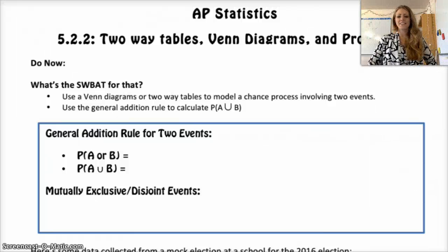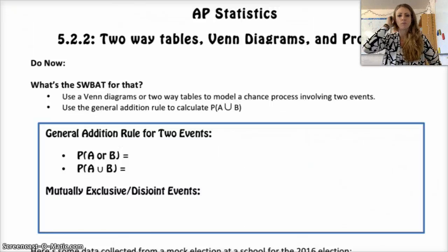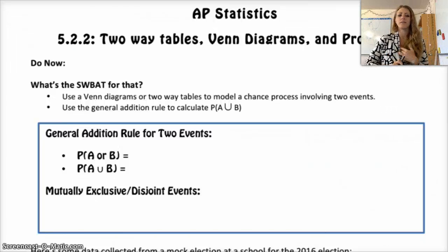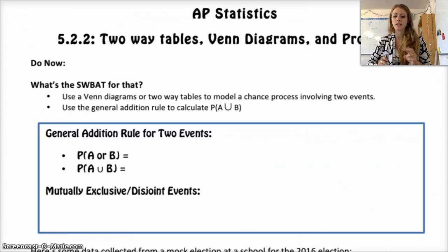Hello APSATS, hope you guys are having a great day. Today we're moving on to the second section of 5.2, which is the Practice of Statistics fourth edition, chapter 5, section 2, second day. So today we're going to talk about Venn diagrams, which hopefully will be a review for you — you've seen them before, probably not analyzed them as much as we will. And then we're also going to look at a couple different probability rules.